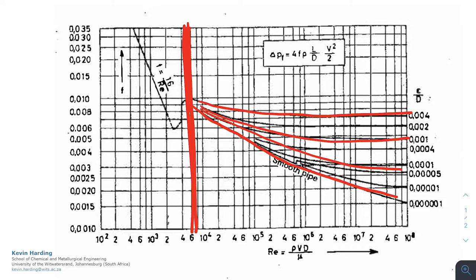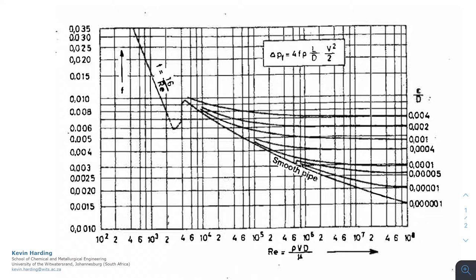Above a value of 10 to the 7, or maybe 5 times 10 to the 7, you'll see that they start to flatten off, but they do curve before they flatten off. In the turbulent region, we will again need to know the Reynolds number. But what we now need to also know is a new term, which is e over d.